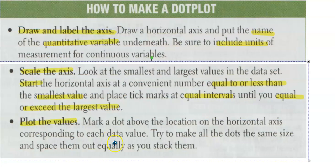Zero, we never scored zero, but we did score 10. Plot our values—that is going to mean a dot above the location on the horizontal axis corresponding to each data value. Try to make all the dots the same size and space them out equally as you stack them.